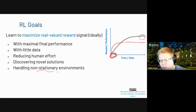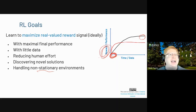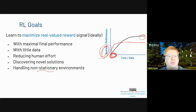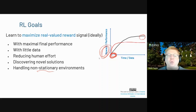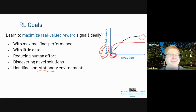Thinking about what reward signals mean is important. If you have multiple reward signals, or you're getting reward from both a person and an environment, you need to think about how to combine that feedback and what it means.